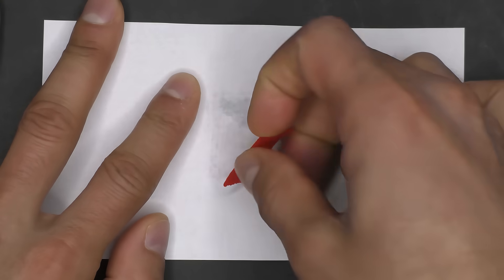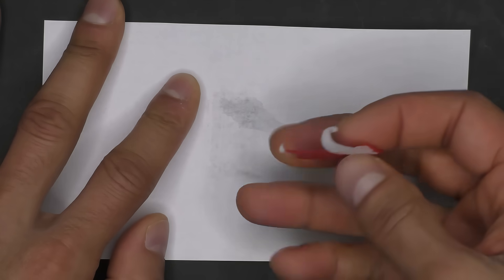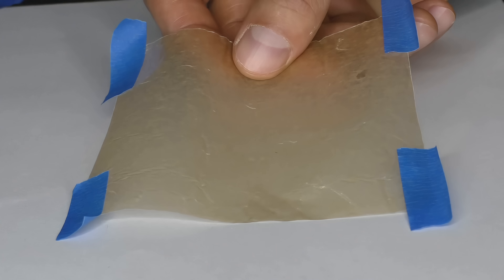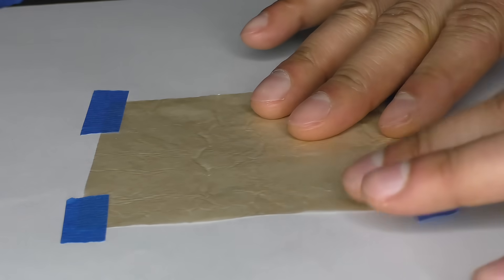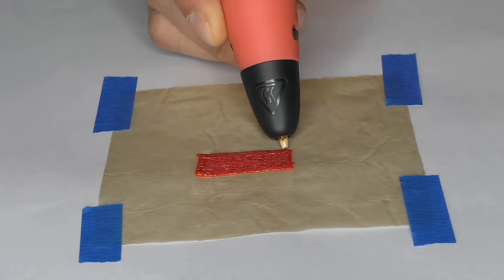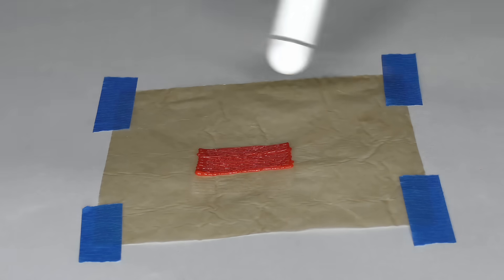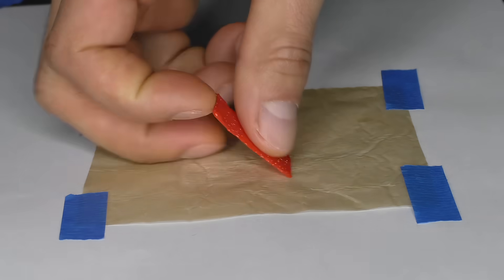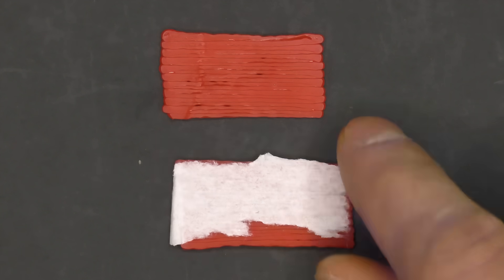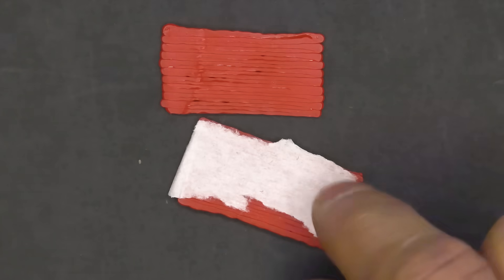Probably the most common mistake that I see people asking about is having filaments stick either too much or too little. In terms of sticking too much, my main tip for this is to tape wax paper over the stencil that you're using. The wax paper holds the filament in place really well and then once it's cooled, allows it to peel off smoothly without bringing parts of the paper with it. Here's a direct comparison of the two methods and you can see the difference is night and day.